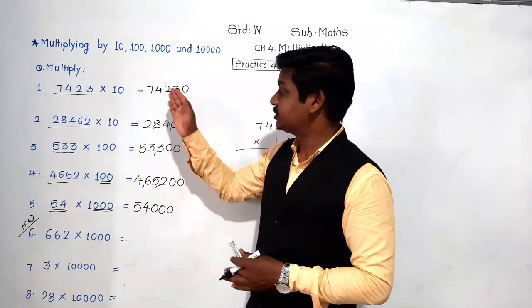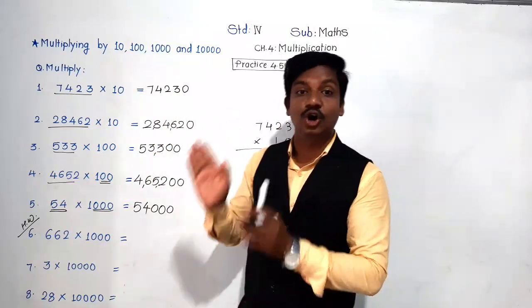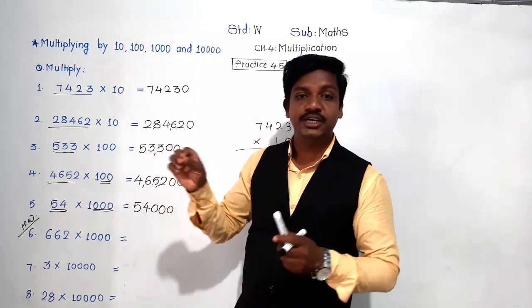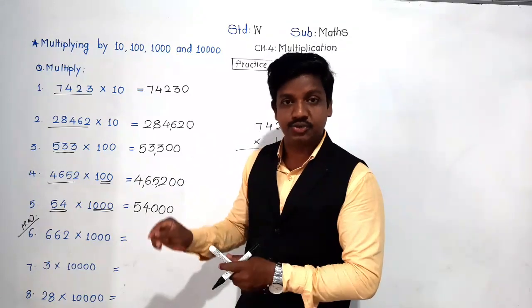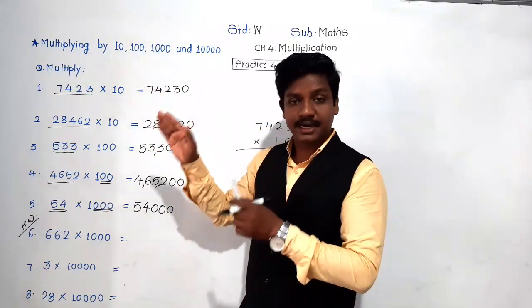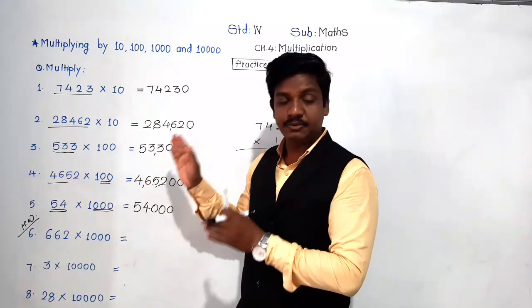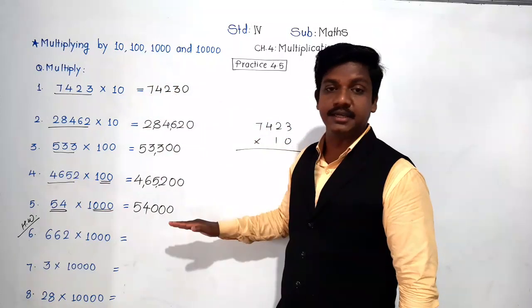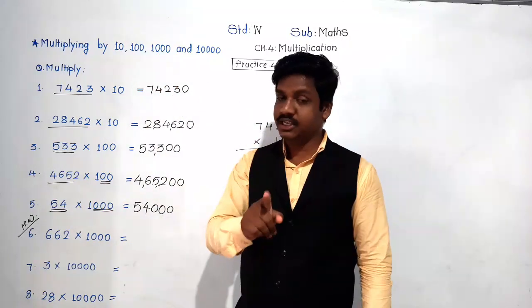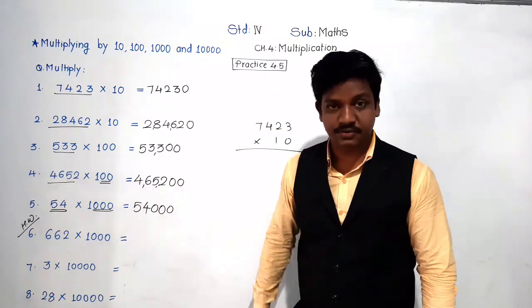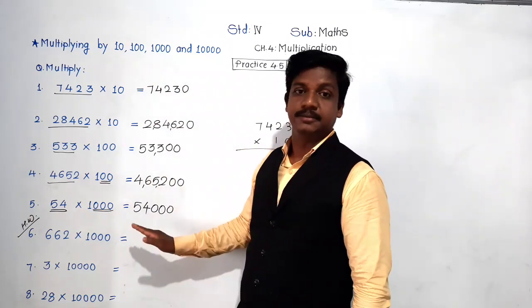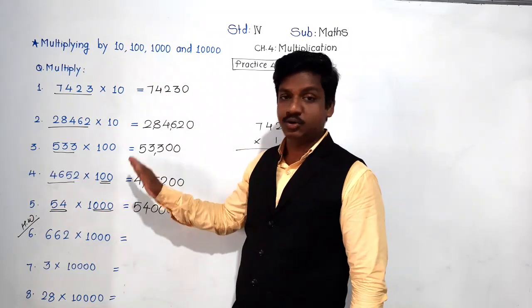If I find that you are multiplying traditionally, I am going to mark it wrong — because your method matters. This method improves your calculation and saves time. In this exercise, method matters. Even in the exam, if you multiply traditionally I will mark it wrong and deduct all the marks for that question. So multiply this way only. If you have any doubt you are free to ask. Thank you and have a nice day.